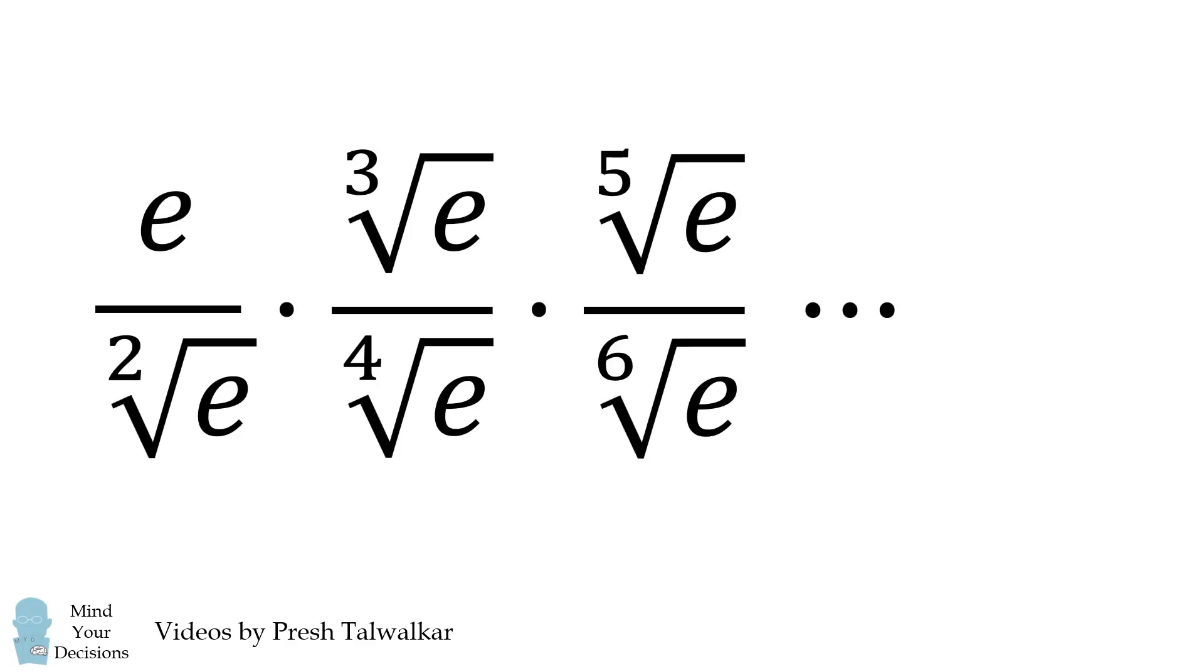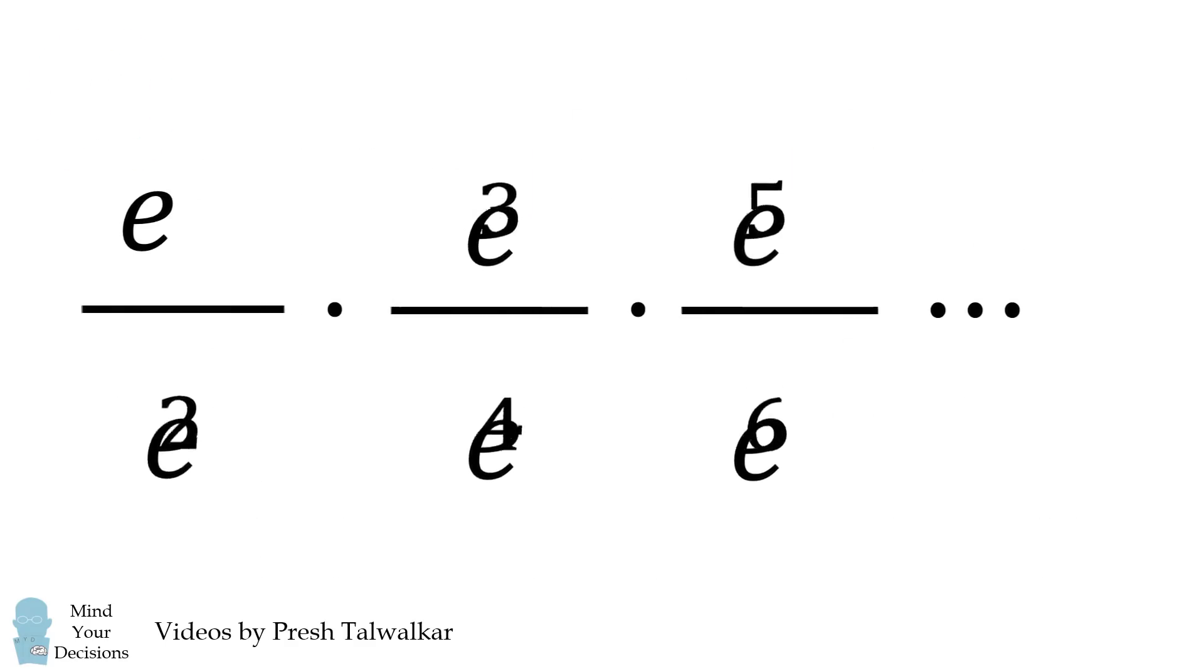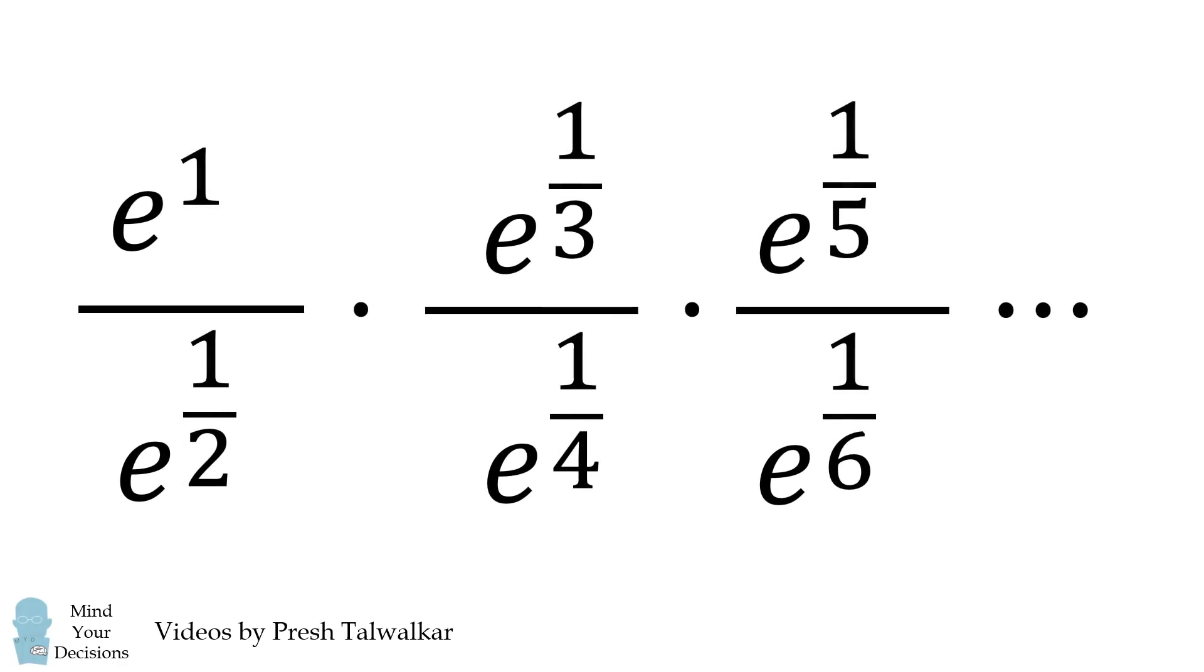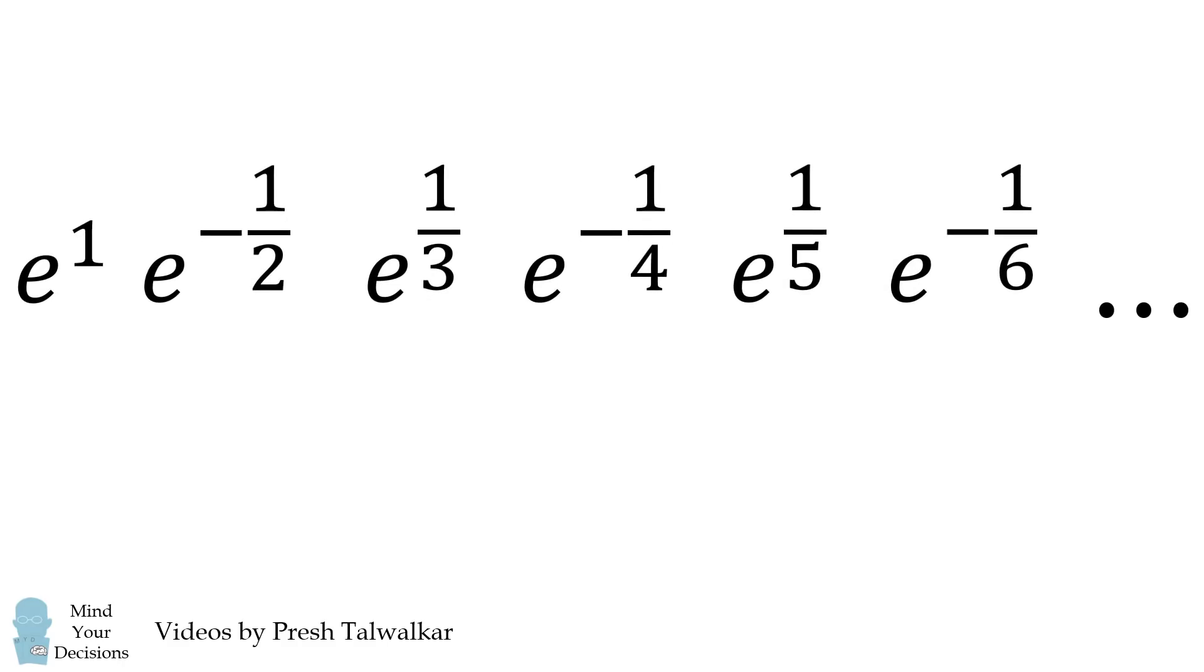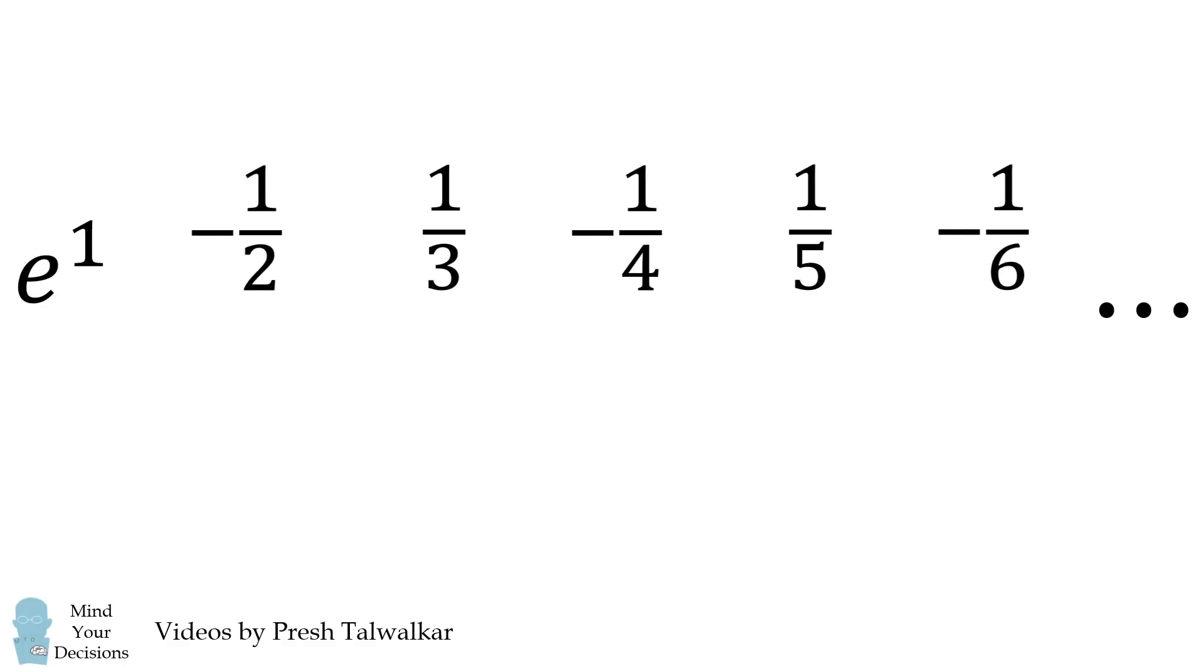We'll get started by converting the nth roots into exponent form. Next, the exponents in the denominators will be negative values. As all of these have the same base, we can put them all together.